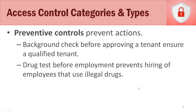Preventative access controls prevent actions before they occur. For example, if you own a house and want to rent it out, you'd perform a background check on tenants to make sure they've been good tenants, haven't gone past due on previous rent, and have good credit. Another example is performing drug tests for new employees as part of the pre-employment process, to ensure employees aren't using illegal drugs. Those are two simple examples of preventative controls.